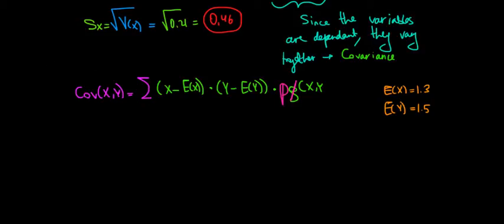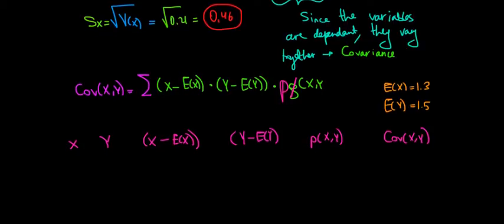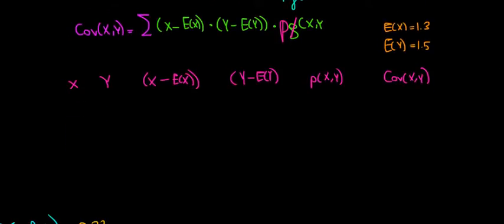So let's keep that in mind: the expected value of y is 1.5 and the expected value of x is 1.3. Now let's make a table. We'll have the values of x and y, the difference between x and the expected value of x, the difference between y and the expected value of y, the probability between them, and the resulting product — to see what covariance that gives us.